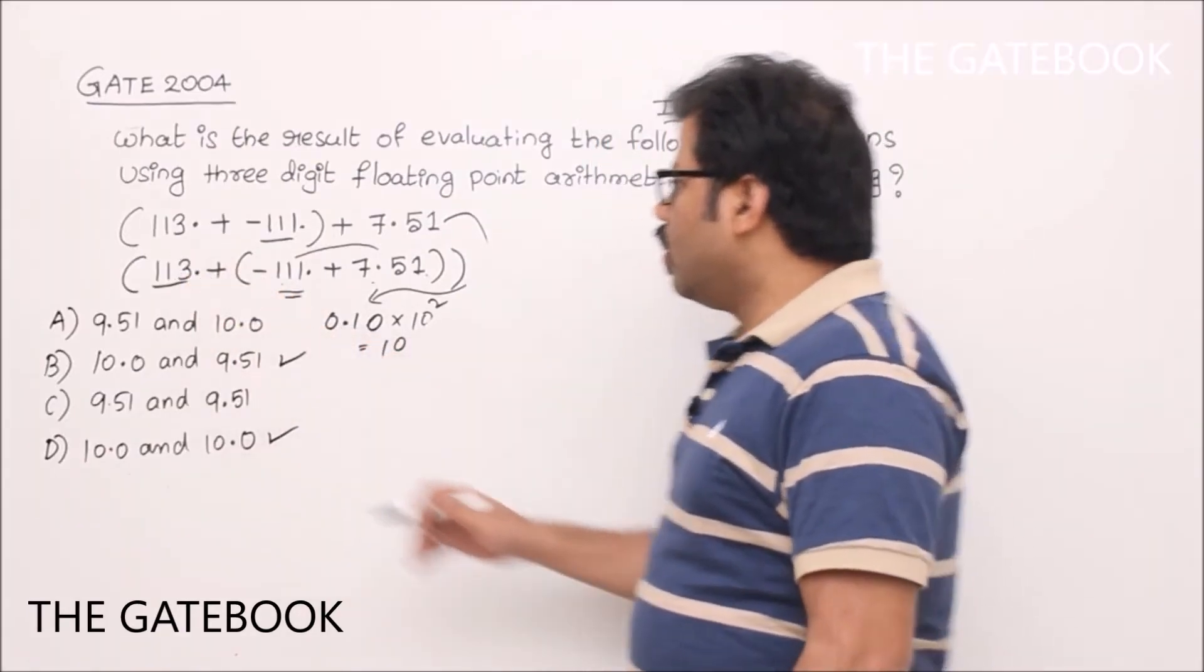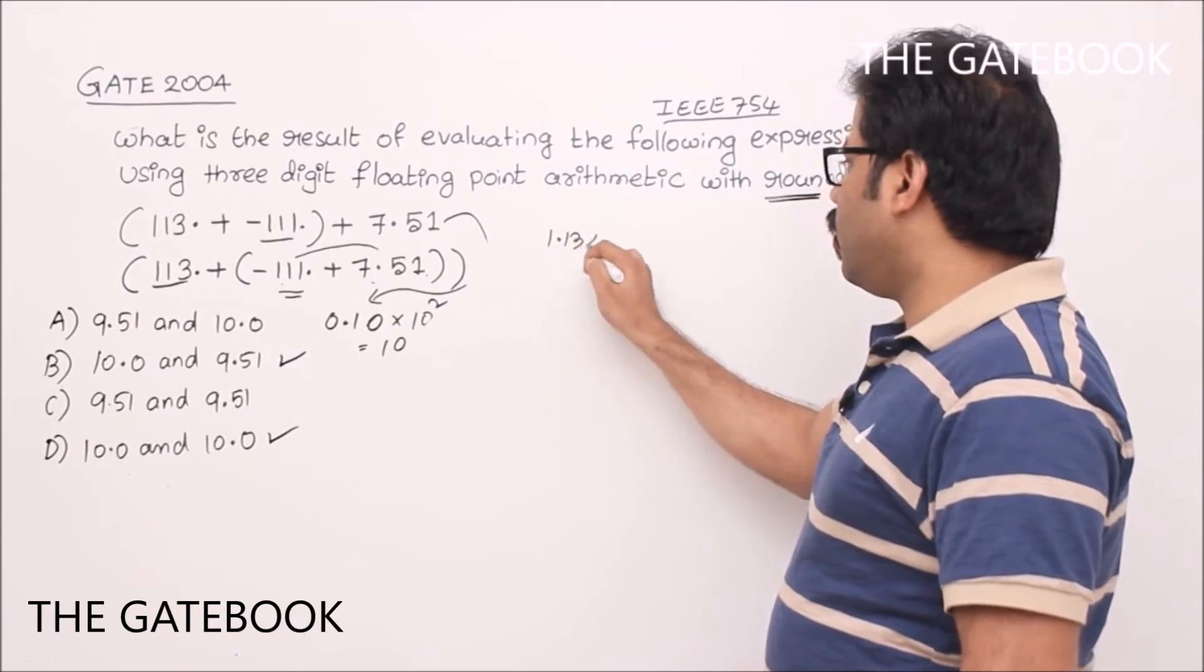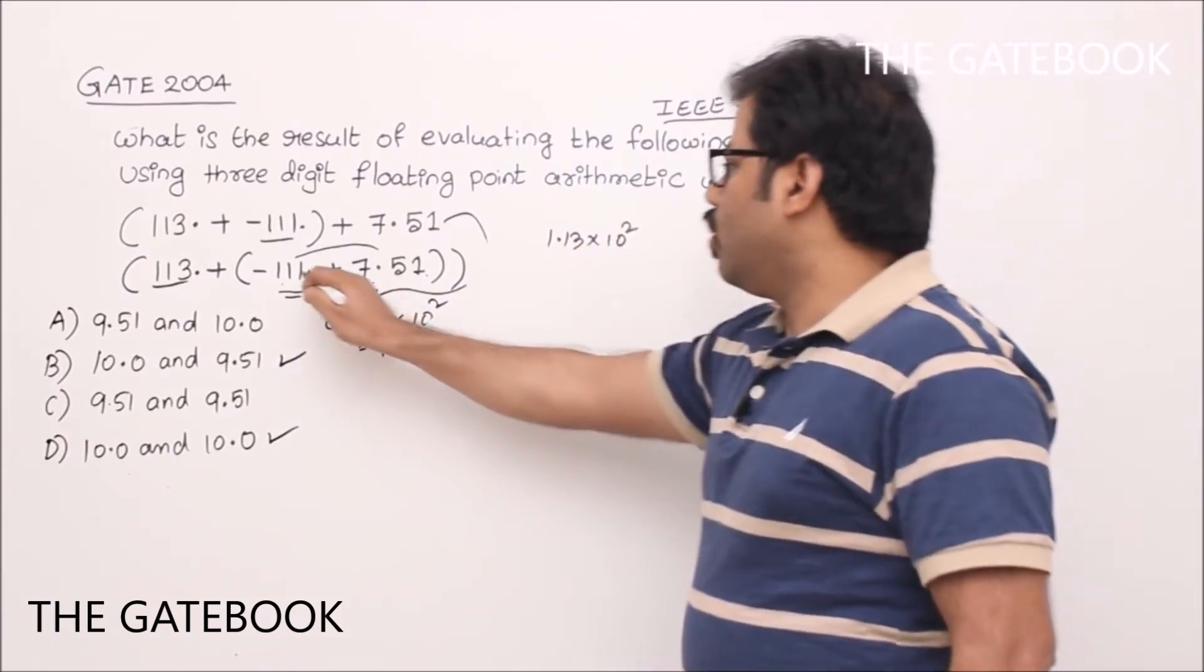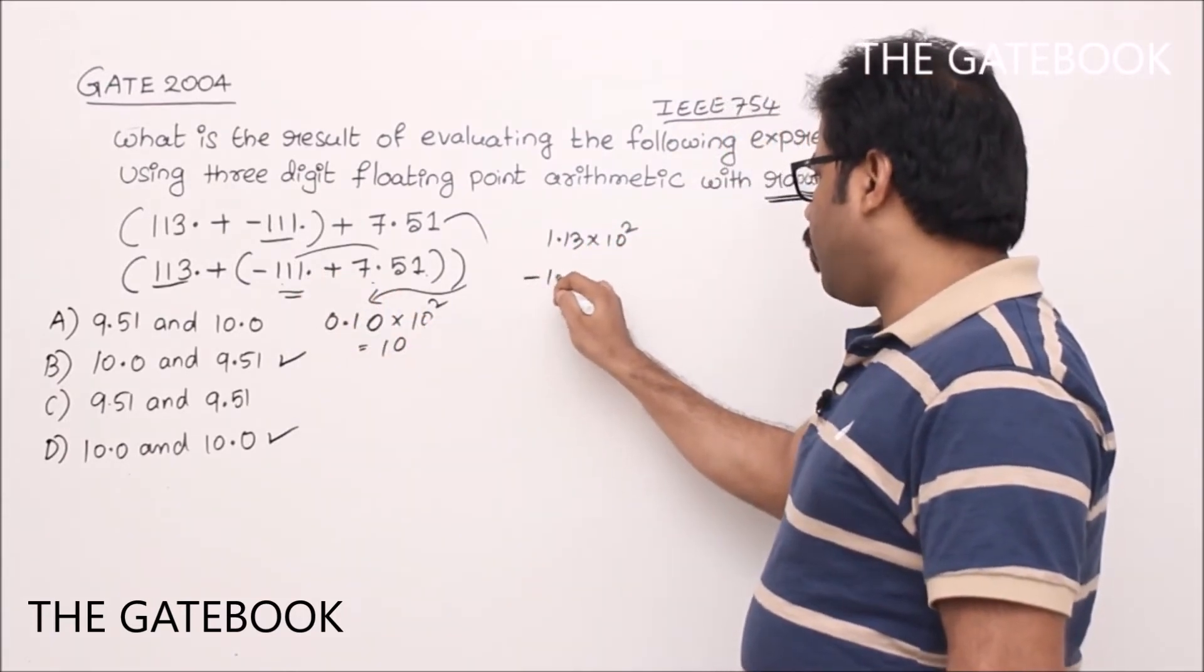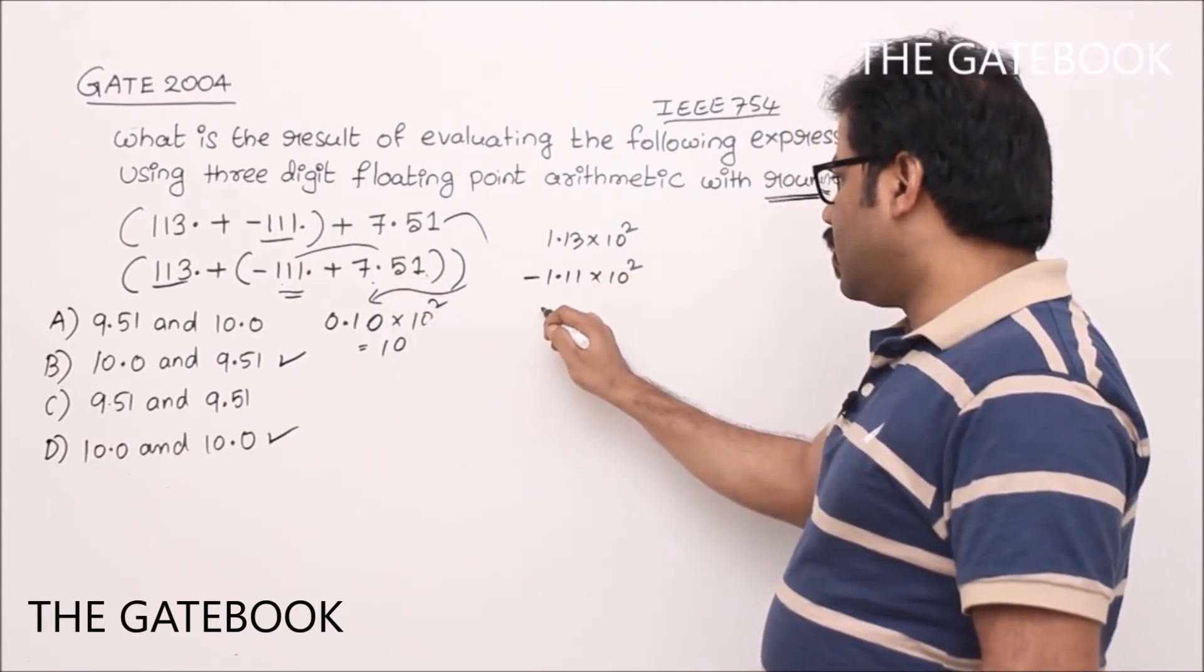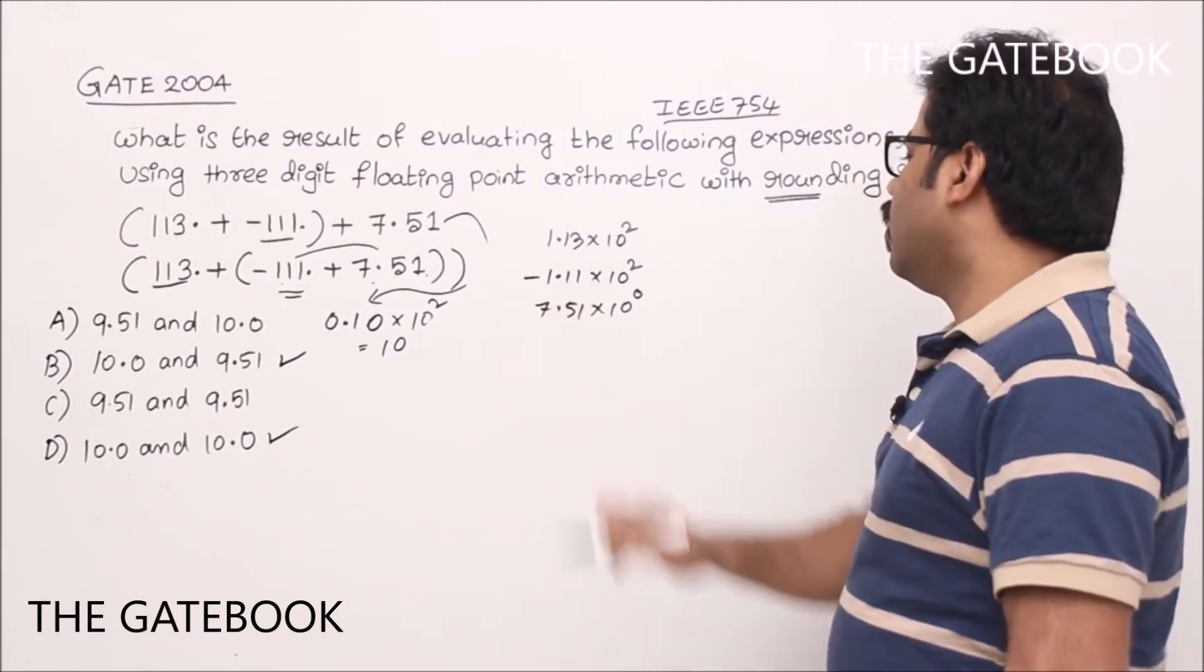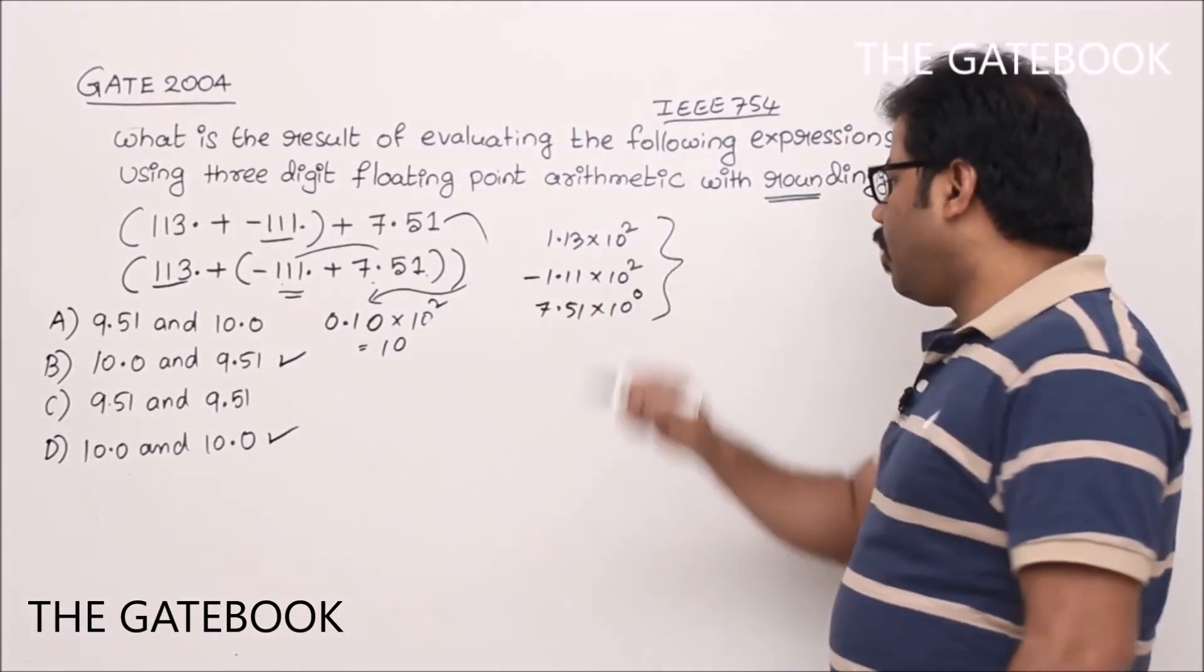Now we will see second one. So again same way we write it. 113 is 1.13 into 10 squared. Minus 111 is minus 1.11 into 10 squared. 7.51 in three digits we write like this: 7.51 into 10 to the power of 0. So these are the floating point representations.